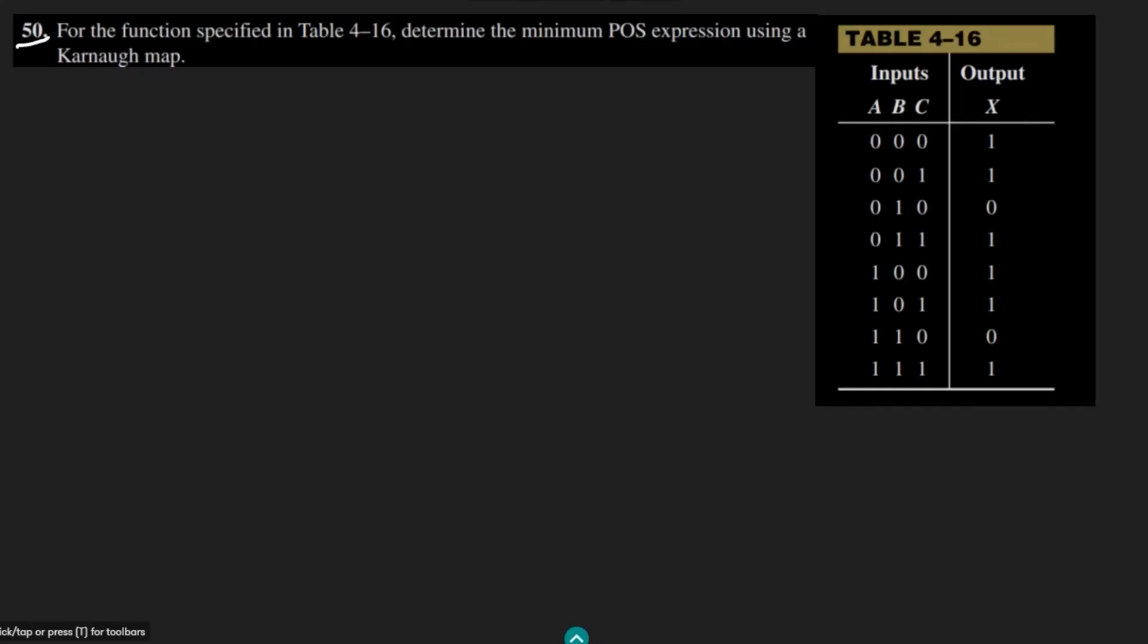Welcome back guys, this is question 50. We are given this table which we have used previously, and in this question we are asked to use table 4-16 and determine the minimum POS. POS means product of sum expression using a Karnaugh map, so again we have to use the Karnaugh map here.